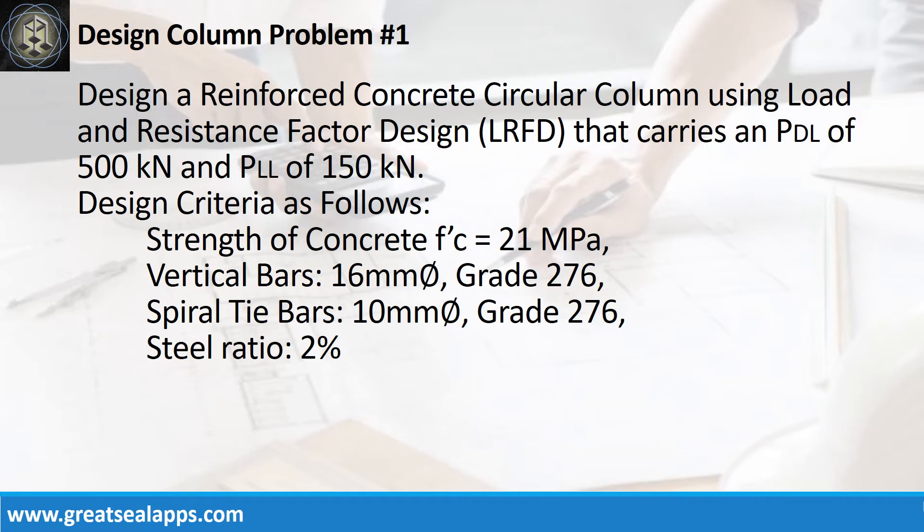Design criteria as follows: Strength of concrete, 21 MPa. Vertical bars, 16 mm bar, grade 276. Spiral tie bars, 10 mm bar, grade 276. Steel ratio, 2%.